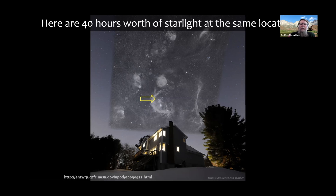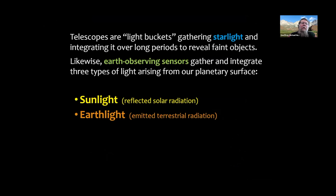Astronomers talk about telescopes as light buckets that gather starlight over long periods of time to reveal faint objects. We can think about earth observing sensors as gathering and integrating three types of light arising from our planetary surface. Most familiar is reflected sunlight — that's what our visual system depends on. But we also sense earth light, or emitted terrestrial radiation: how warm the environment is.